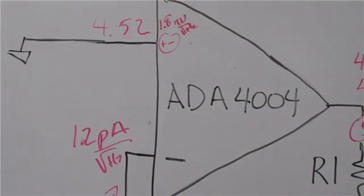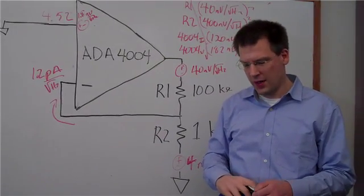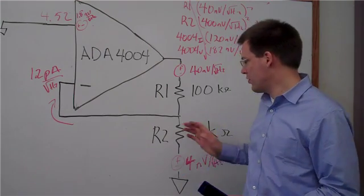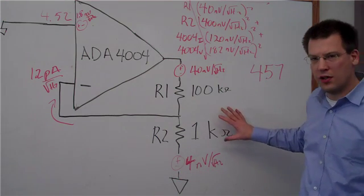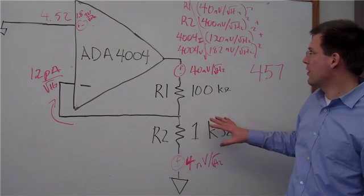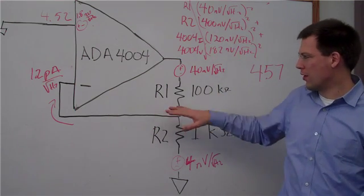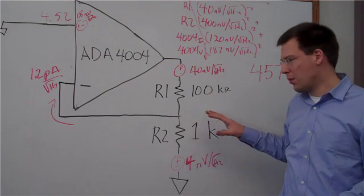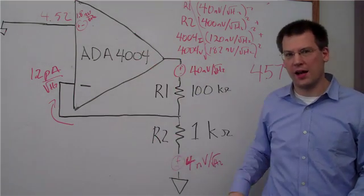Something I want to point out is that 4.52 is a lot bigger than the 1.8 nanovolts per root hertz voltage noise of this amplifier. We're not really getting the best performance out of this circuit. The main reason is that the resistors we chose weren't terribly intelligent choices. We should have used much lower values for these resistors. Then the contribution from both the resistor noise, which is 400 nanovolts per root hertz, as well as the current noise coming through these resistors would be much lower. If we use much lower valued resistors, we would get something closer to this theoretical minimum of 1.8 nanovolts per root hertz.